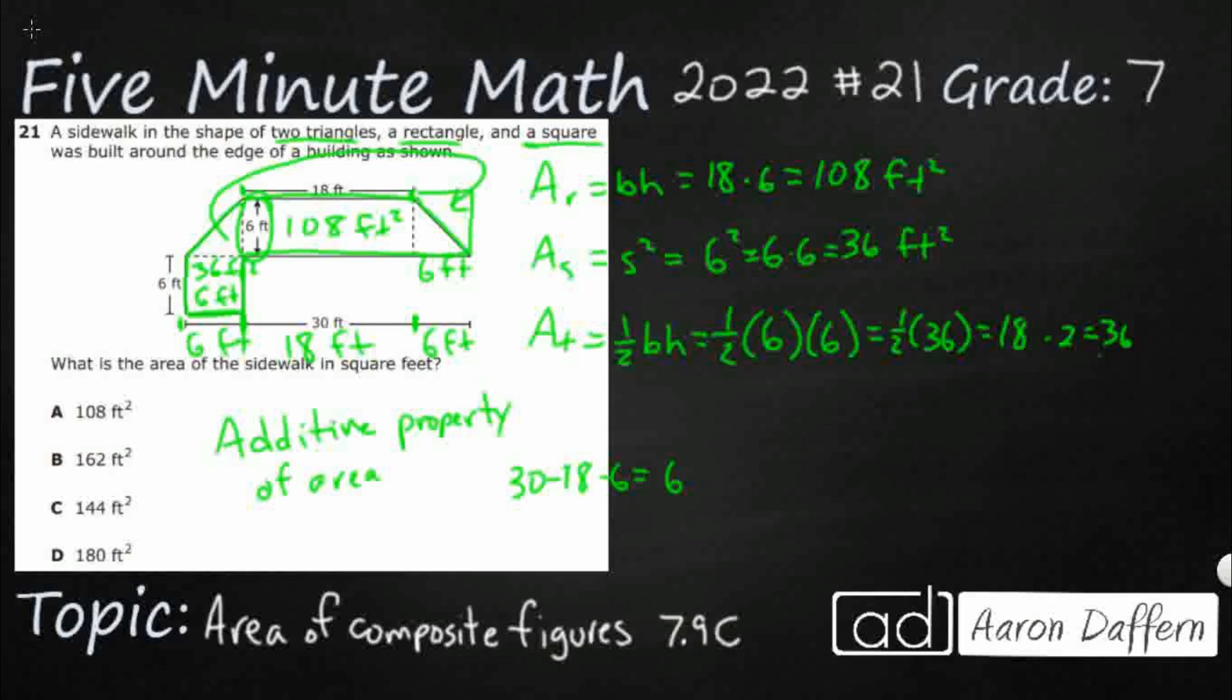So these are my three measurements here: 36, 36, 108. So now we just need to use the additive property, add them up, and you're going to get 180. The answer is D.